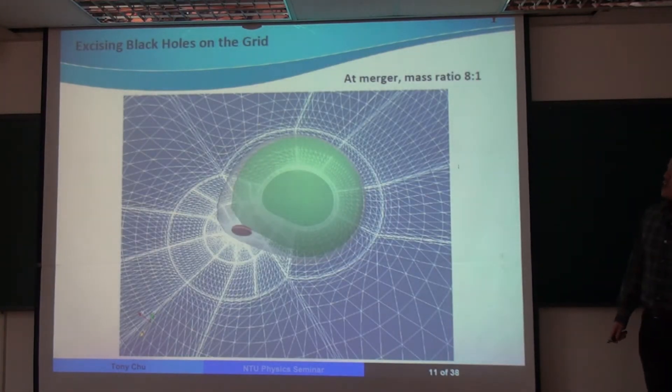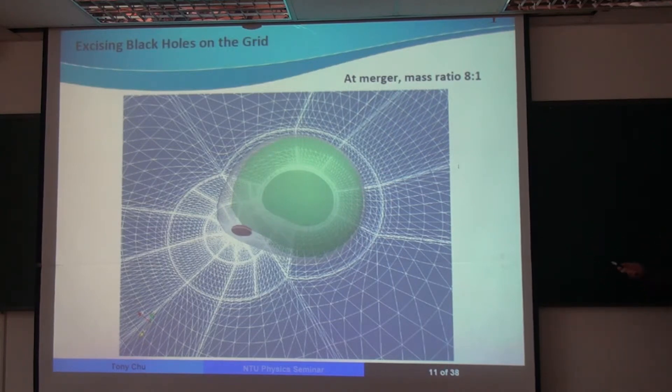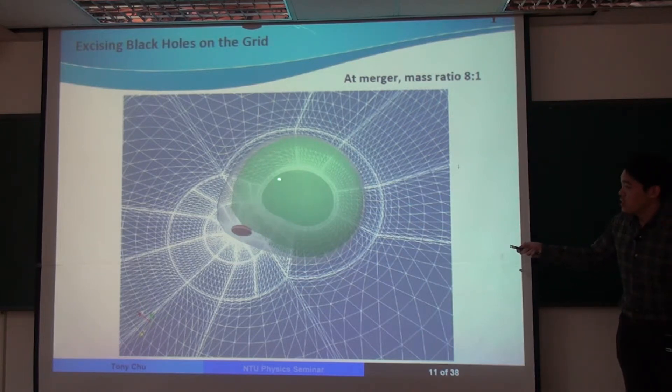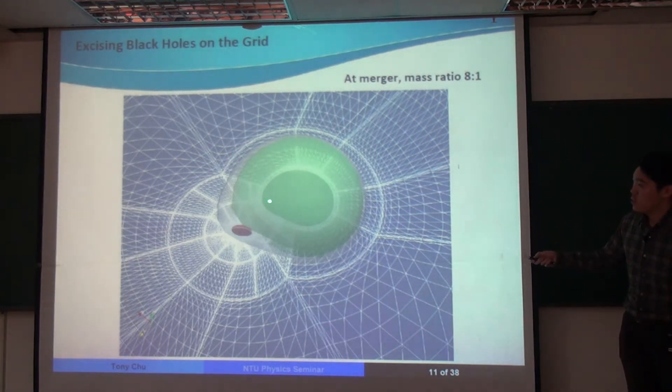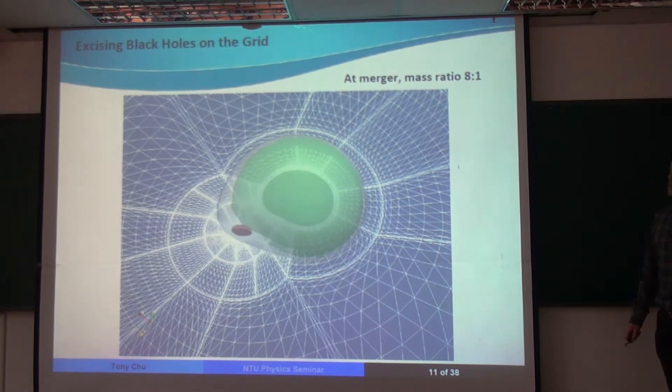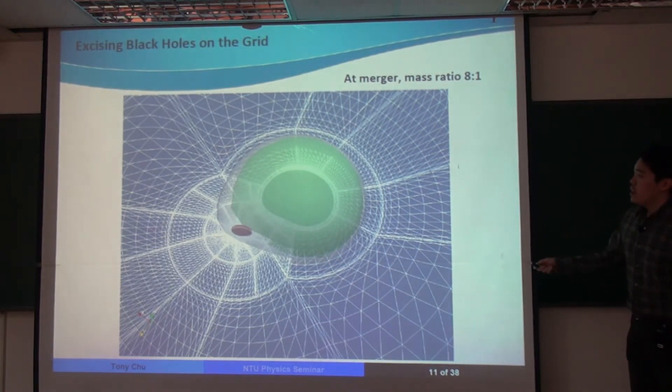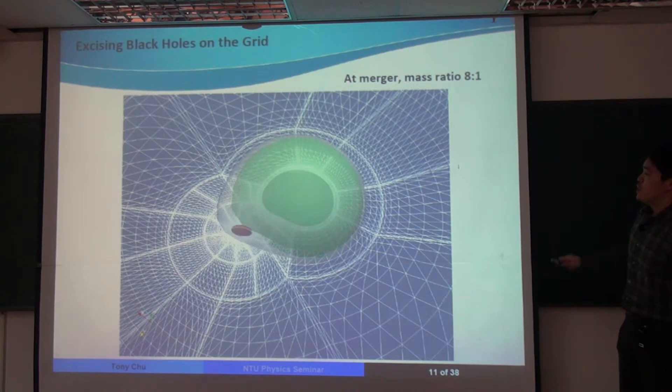So, here's a picture of the merger of two black holes, where the big black hole is eight times bigger than the smaller black hole. And this is one of the simulations that our collaboration has done. The green surface here is the horizon of the bigger black hole. The red surface is the horizon of the smaller black hole. And if you look at this green surface, it's a bit transparent, so you can look inside.